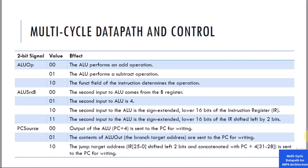We need a combination of signals to control all of these inputs. The ALU operation is a 2-bit signal. It can be 00 when we want to perform addition, 01 when we want to perform subtraction, and 10 when the ALU determines the operation according to the function field after decoding. ALU source B selects between the contents of temporary register B, the constant 4, the sign-extended 16-bit immediate field, or the left-shifted immediate field as the second operand.